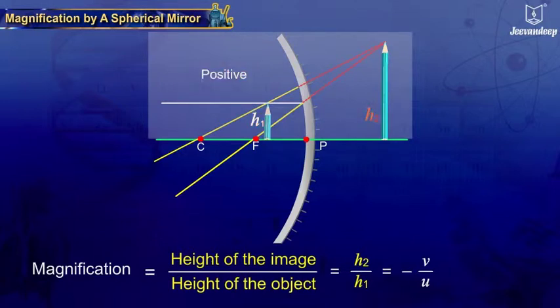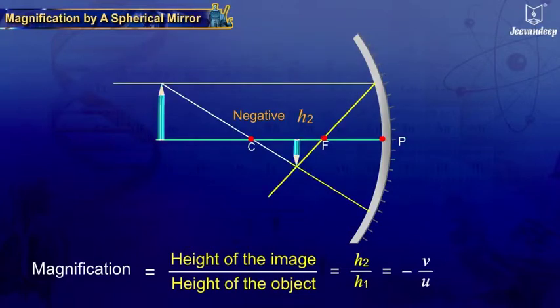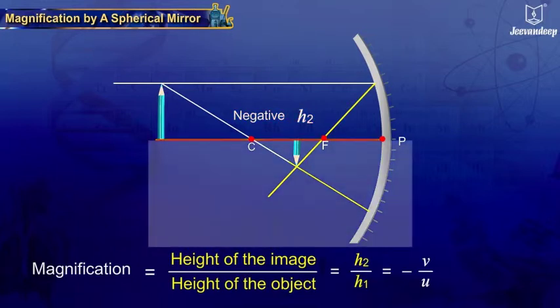H2 is taken as positive for a virtual image, being above the principal axis, and negative for a real image, being below the principal axis.